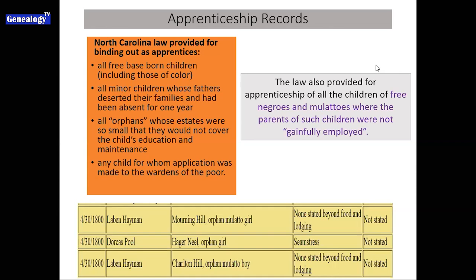The law also provided for apprenticeship of all children of free Negroes and mulattoes where the parents were not 'gainfully employed' — which is very subjective. The snippet I have here is from a nice transcription on the North Carolina GenWeb for Terrell County, North Carolina. Here you see Morning Hill, an orphan mulatto girl, and her brother Charlton Hill, an orphan mulatto boy, who were apprenticed on the same day, April 30th, 1800, by a man named Laban Heyman. Charlton Hill is my third great-great-grandfather, who was born free, born to a white mother named Cecilia Hill.